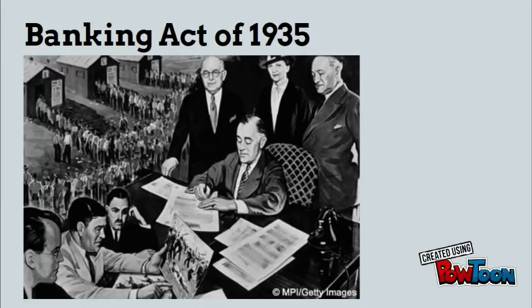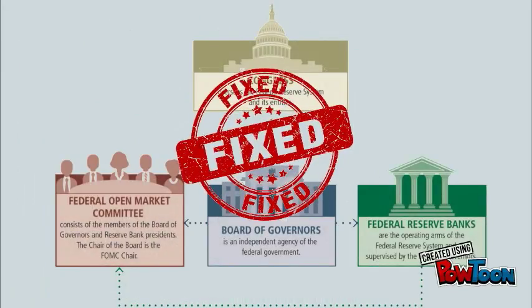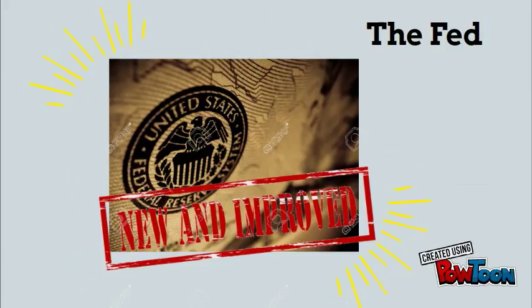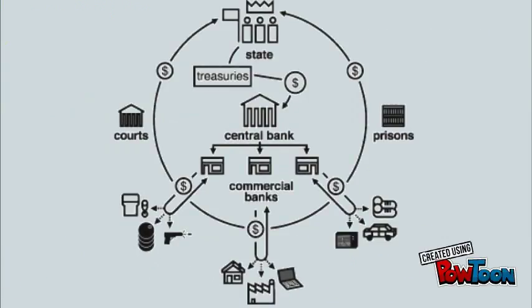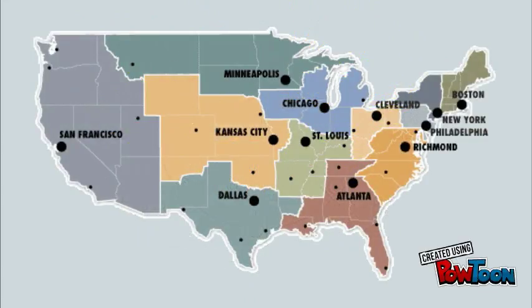Through the Banking Act of 1935, Congress adjusted the Federal Reserve's structure so the system could respond more effectively to future crises. These reforms created the current Federal Reserve System. The new Fed is more centralized so the regional banks can act consistently with each other while still representing their own district's banking concerns.